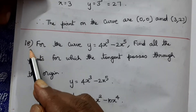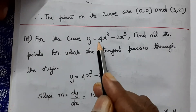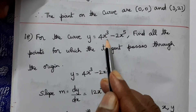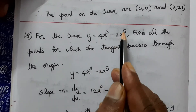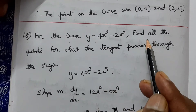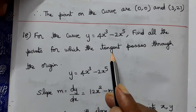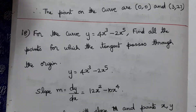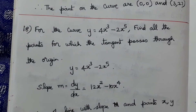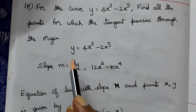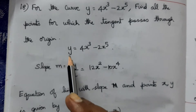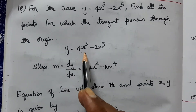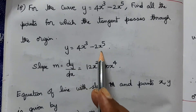Problem 18: For the curve y = 4x³ - 2x⁵, find all points at which the tangent passes through the origin. The slope of the curve is dy/dx. The equation of the tangent line at a point (x₁, y₁) with slope m passing through the origin must satisfy the origin condition.